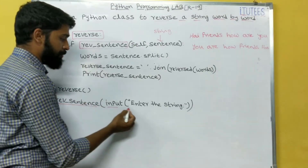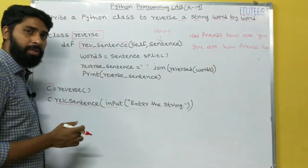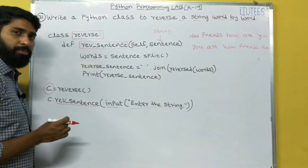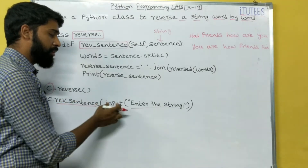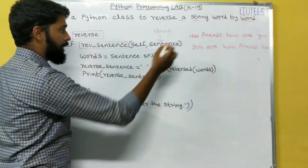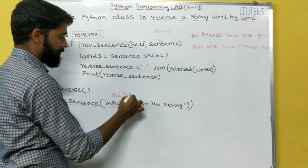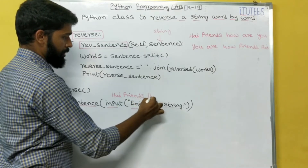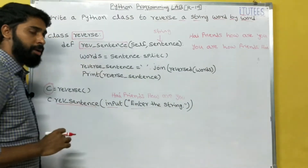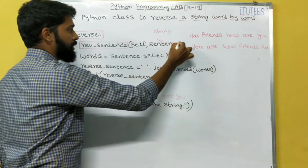You can take the input like this also. In previous examples we read the data from the keyboard, assigned it to a variable, and gave that variable as an argument. Instead of that, you directly write the function call here. For example, entering the string 'hi friends how are you' — that input is stored in 'sentence'.